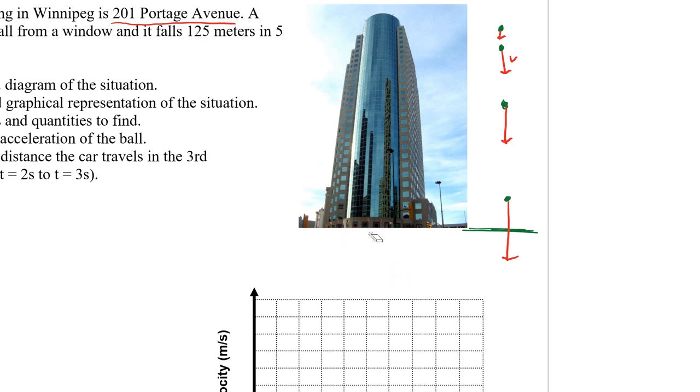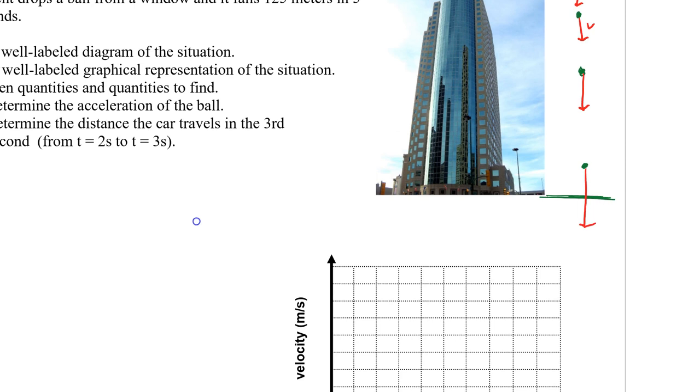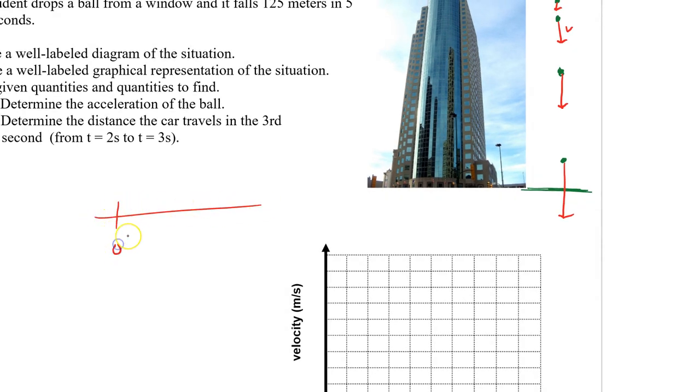So instead of using x, we're going to use y. And we can decide which way we want to have positive and which way negative. In the past, this was our origin and that was the positive direction, that was the negative direction, and we would use x. So now we're doing vertical stuff. And this is the way the object is falling. We can make up positive and down negative, or we can make down positive and up negative.